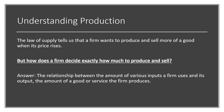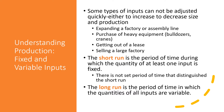To begin, we'll look at understanding production. The law of supply tells us that a firm wants to produce and sell more of a good when its price rises, but how does a firm decide exactly how much to produce and sell? Our starting point is the relationship between the amount of various inputs a firm uses and its output — the amount of a good or service the firm produces. If a coffee shop wants to sell more lattes, it will need more inputs, but should it hire more baristas or buy more espresso machines?